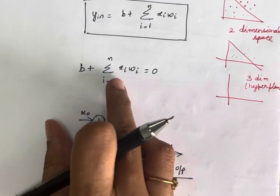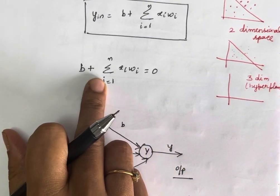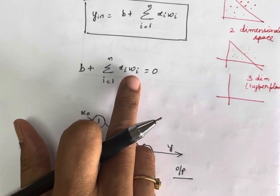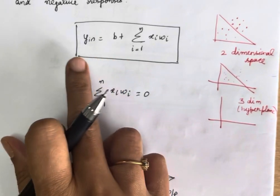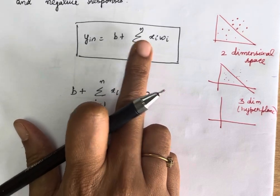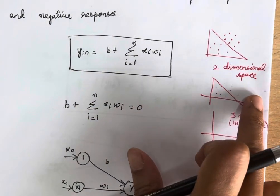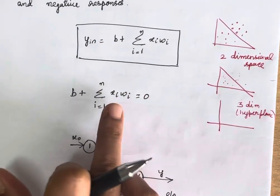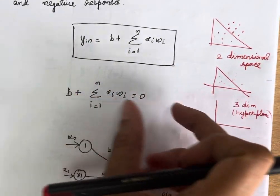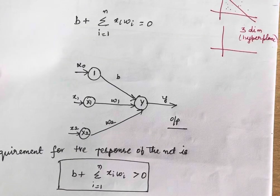We can write this in equation form: y_input = b + Σ(i=1 to n) xi·wi. Suppose if you want to draw a decision line, then you should equate this particular equation to zero.